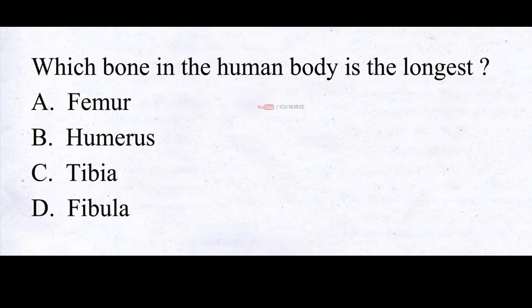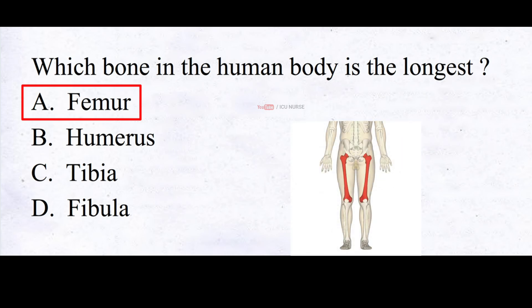Which bone in the human body is the longest? A. Femur, B. Humerus, C. Tibia, D. Fibula. And the correct answer is A. Femur. The femur is the longest bone in the human body.